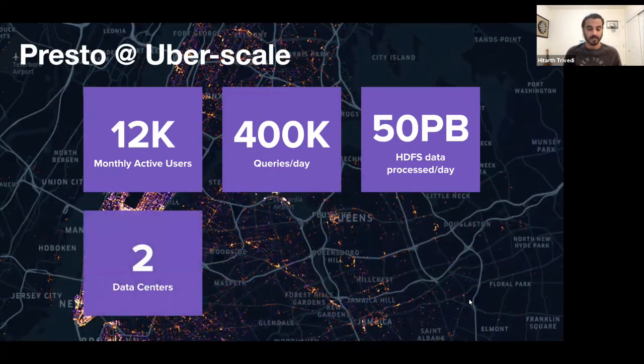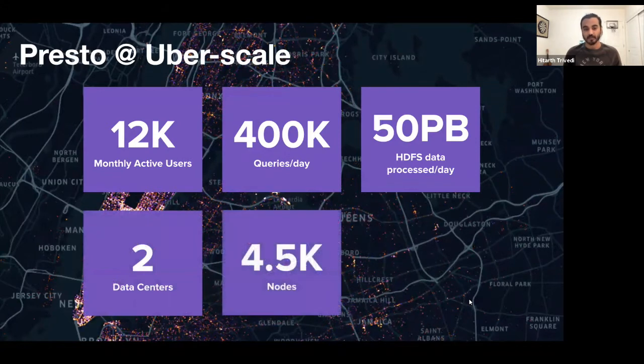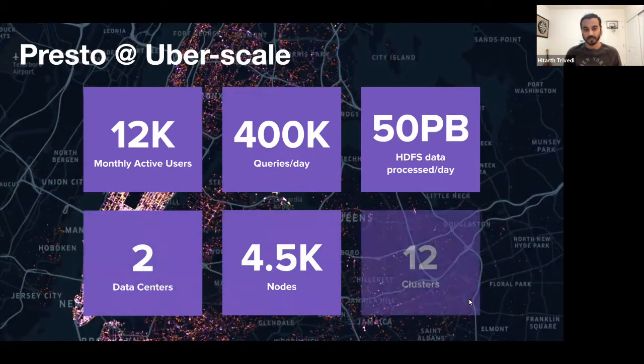Presto clusters are present in two data centers. Presto clusters comprise of approximately 4.5K nodes. And there are 12 different Presto clusters at Uber.